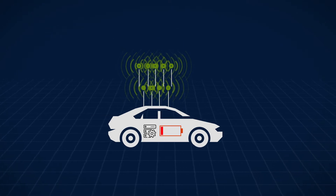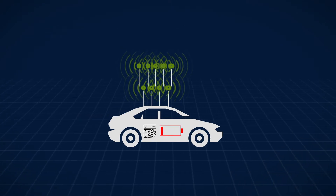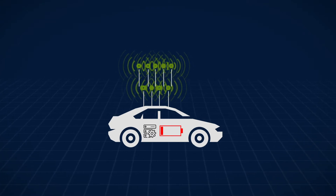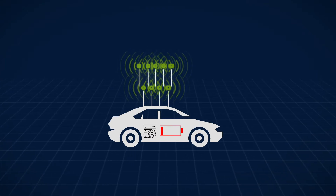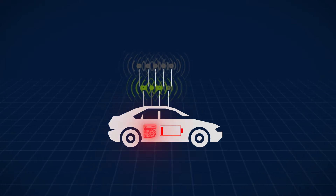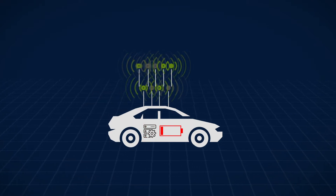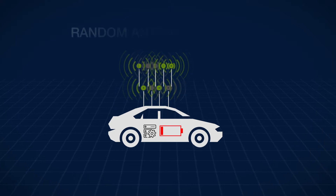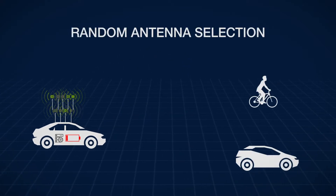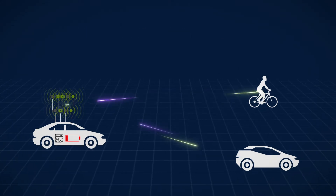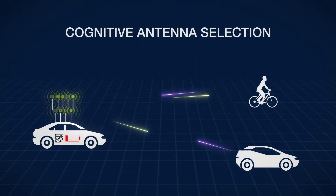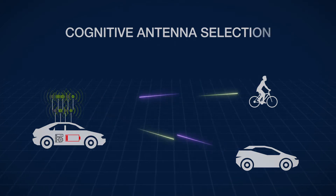To create a balance between complexity, power, and resolution, a sparse array of antennas is used. Selecting the sparse array is computationally expensive. A simple solution is to apply random selection. However, a random selection is independent of the targets seen and is less efficient than a cognitive selection that is made using data from the actual targets.